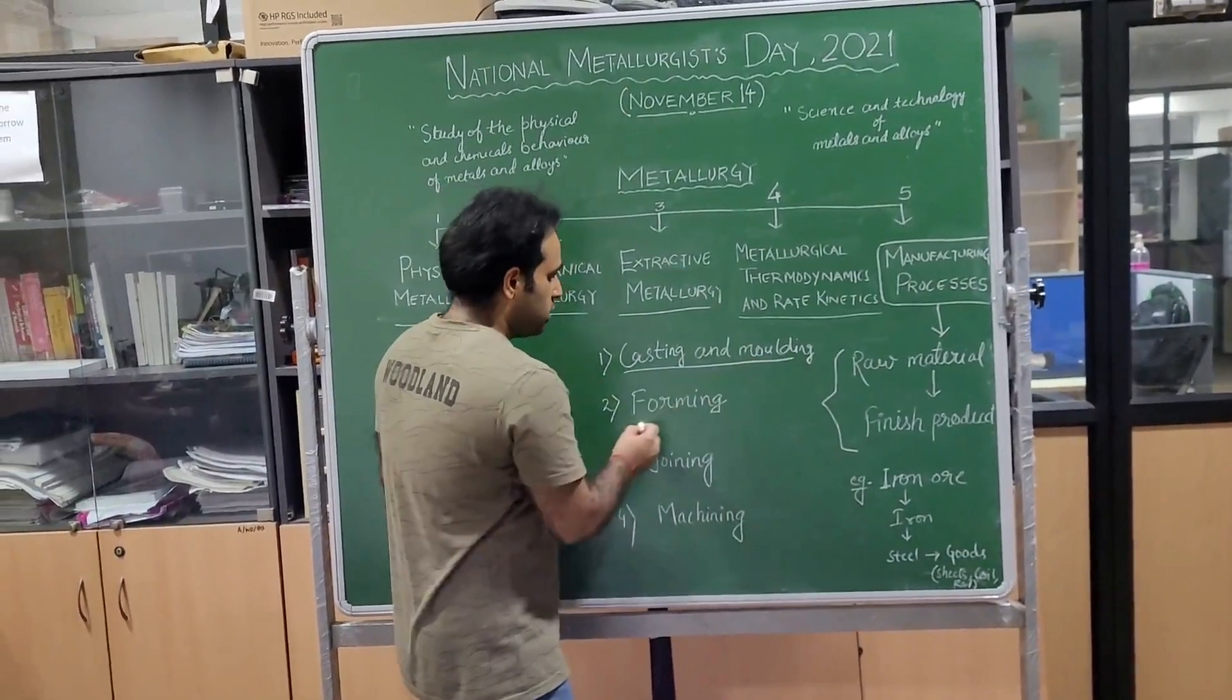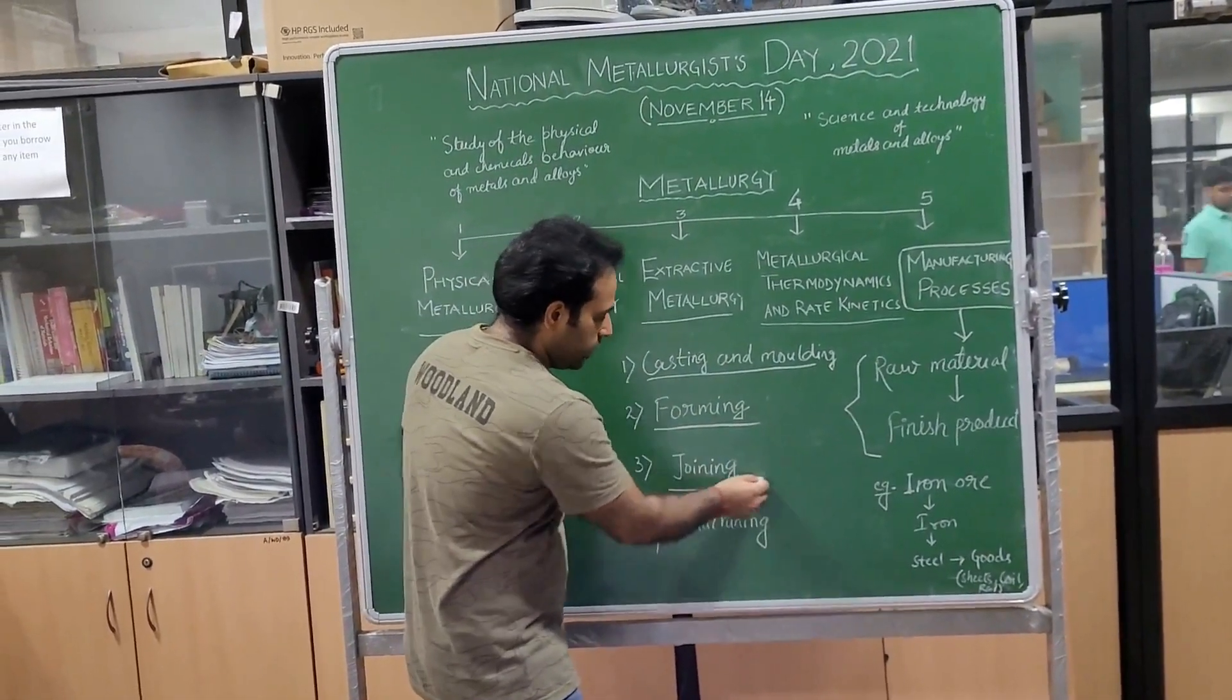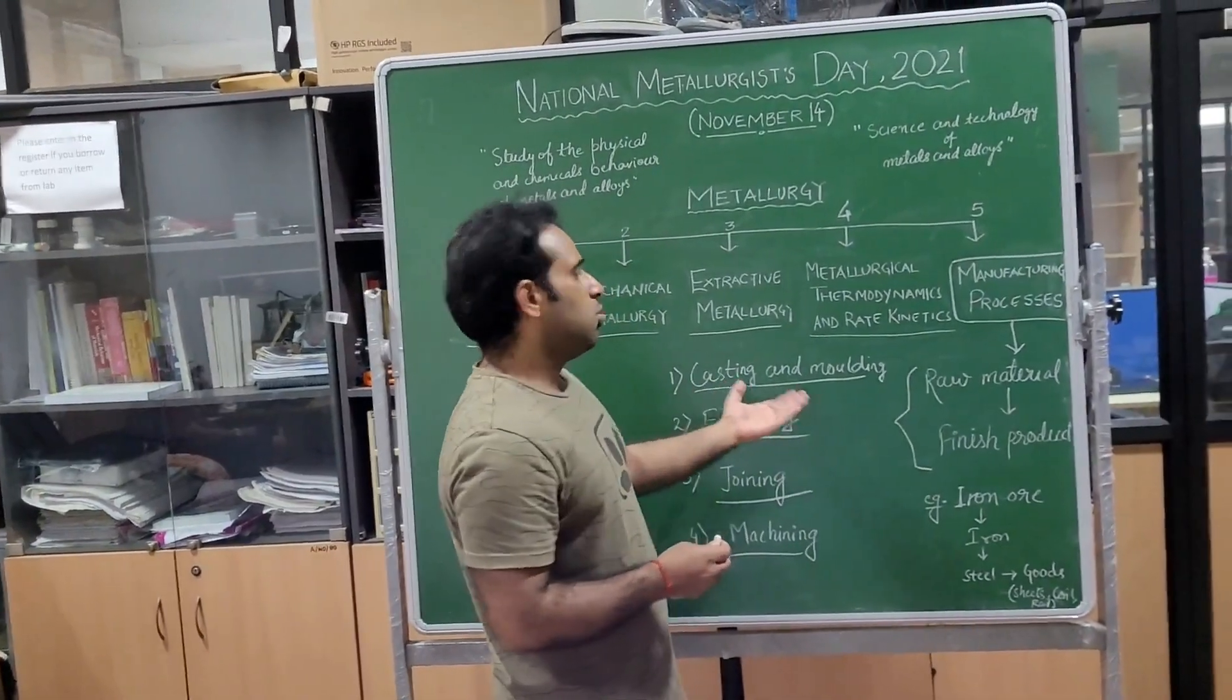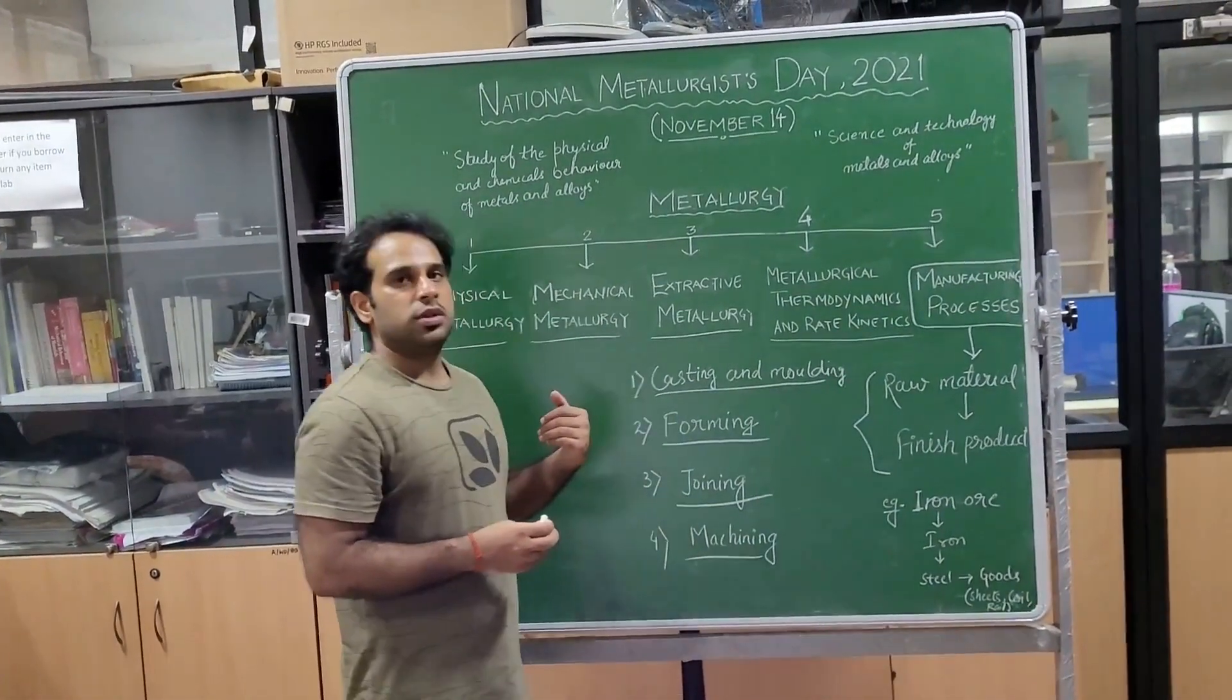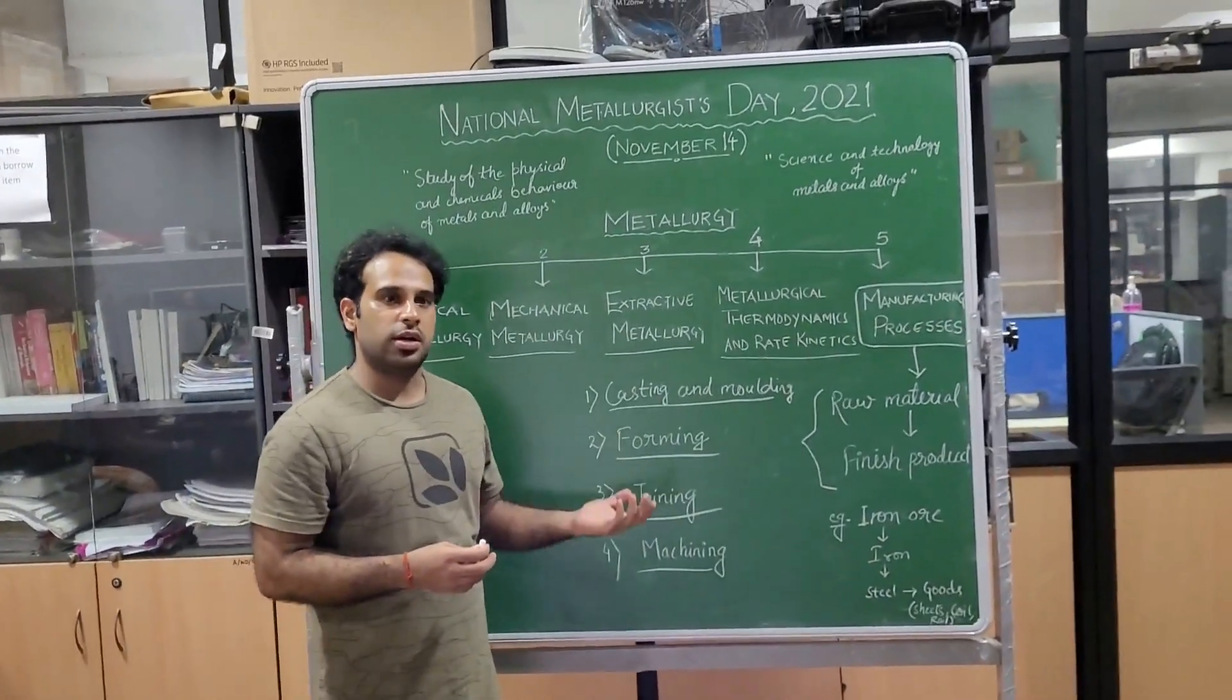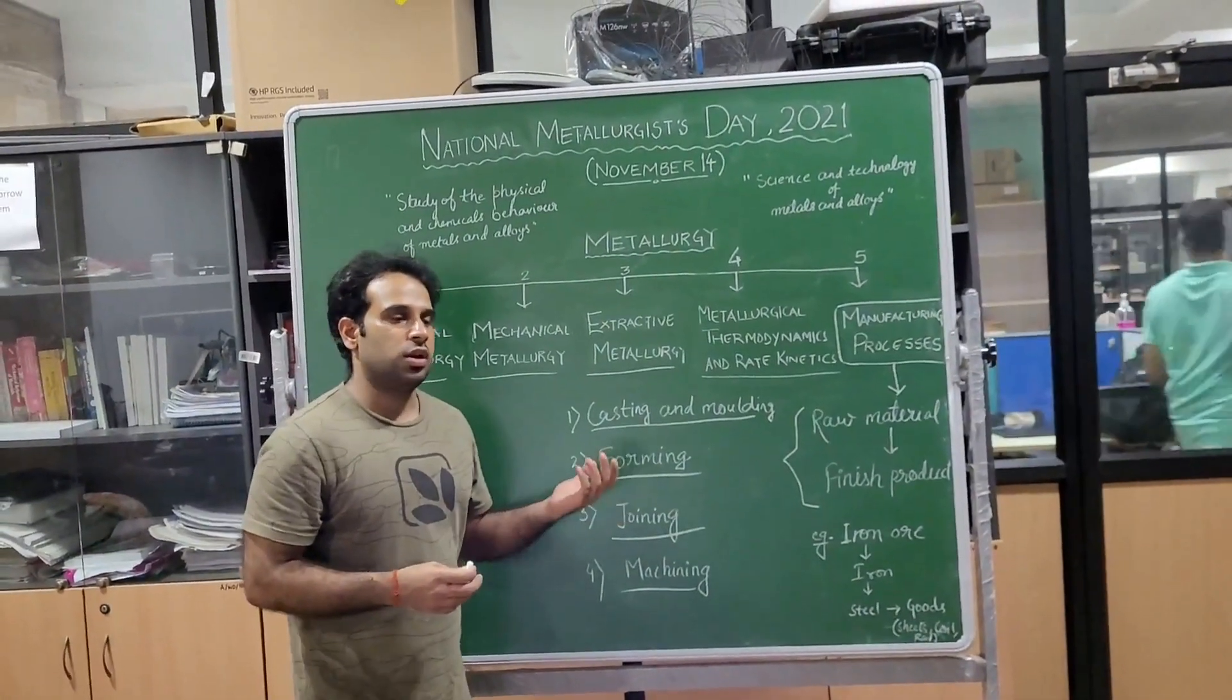The first one is casting and molding, second is forming, third is joining, and fourth is machining. In casting and molding, different kinds of casting processes come under this category, for example die casting, explosion casting, or investment casting.